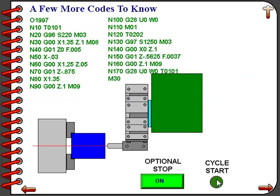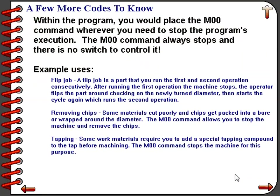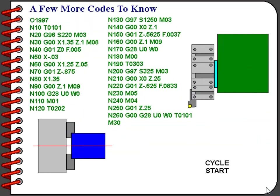The M00 command is a program stop command. It is used anywhere within the cycle to stop the machine for a manual operation. One example is a flip job — a part where you run the first and second operation consecutively. After first running the first operation, the machine stops at M00. You then take the part out, flip it end for end, put it back in the chuck, and run the second operation.